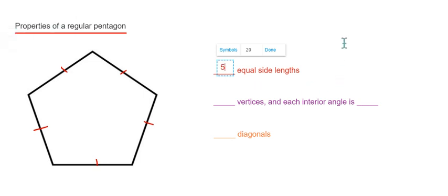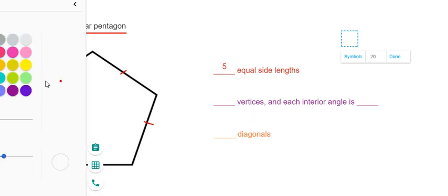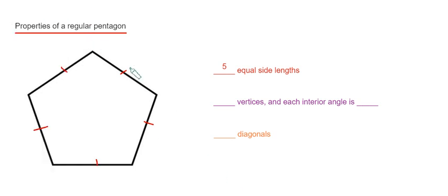is of equal length. That's why it's called a regular pentagon. And let's look at the number of vertices. So we have one, two, three, four, five. So we've got five vertices, and the size of each interior angle